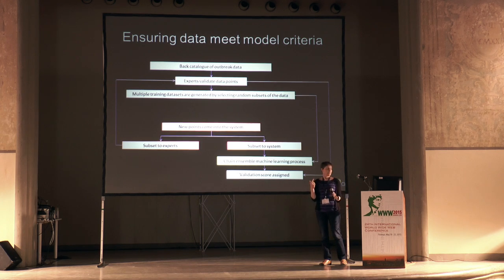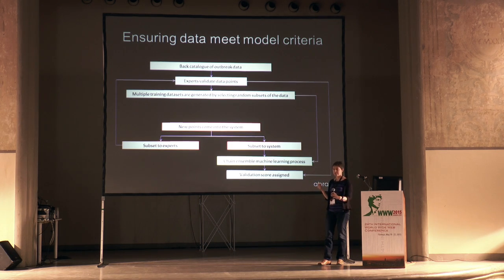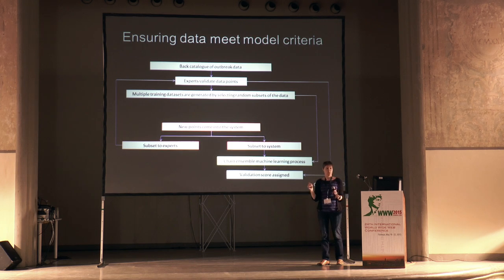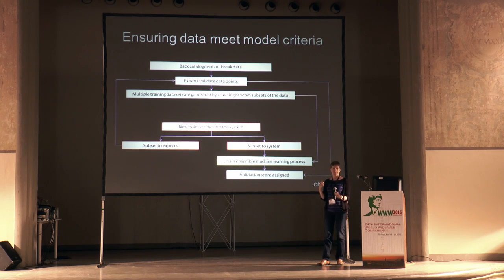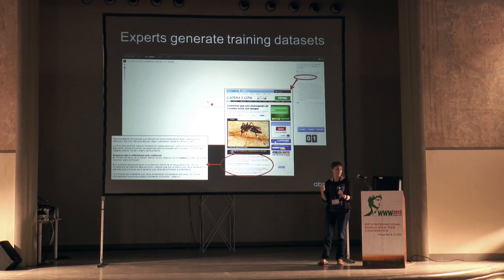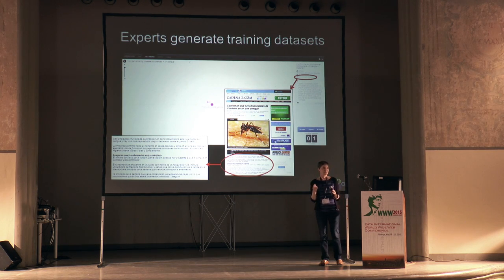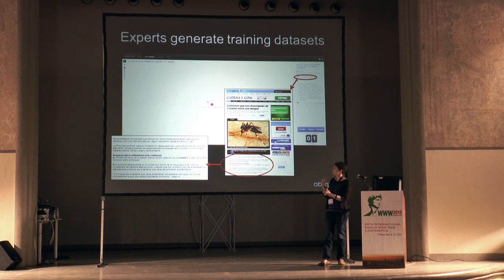A machine learning system then validates new data as it comes in, but a subset of that new data always goes through to the experts. In that way the training data set is kept up to date, and if the disease changes we can account for that. Going into this in a little more detail: